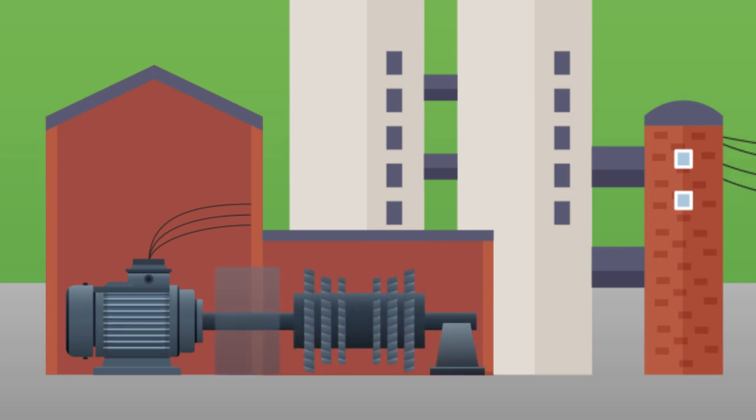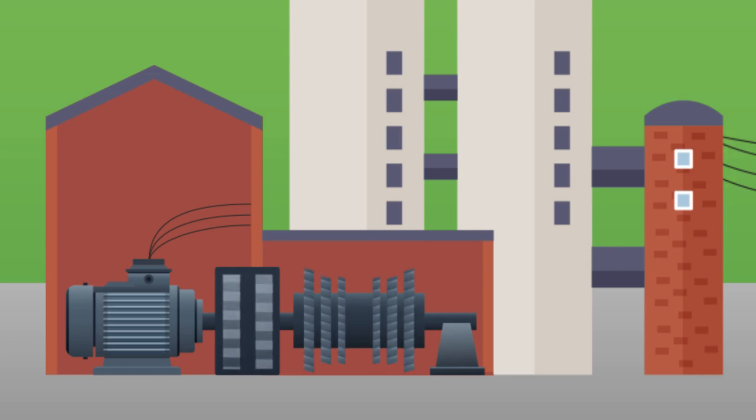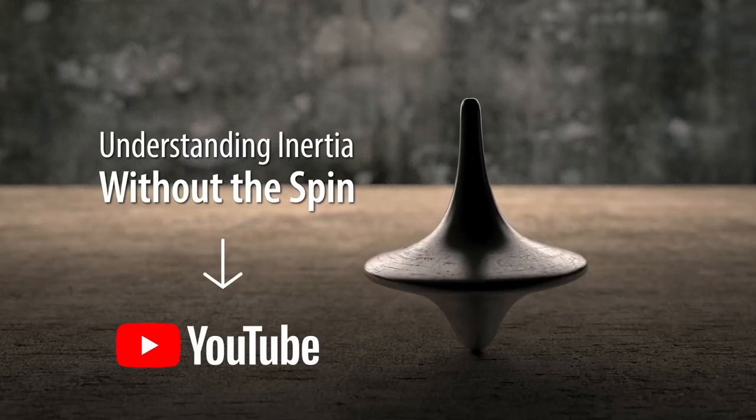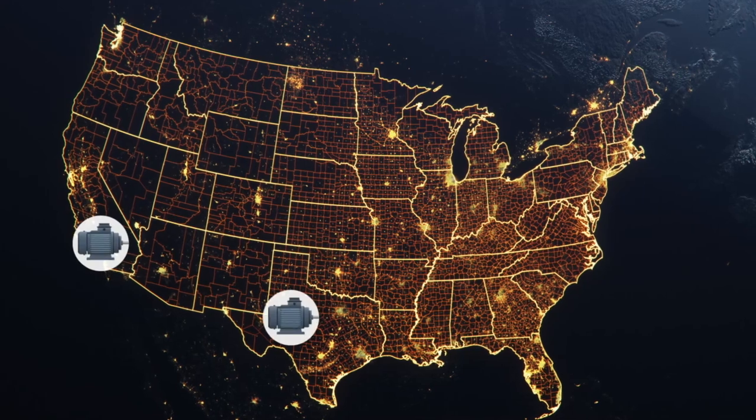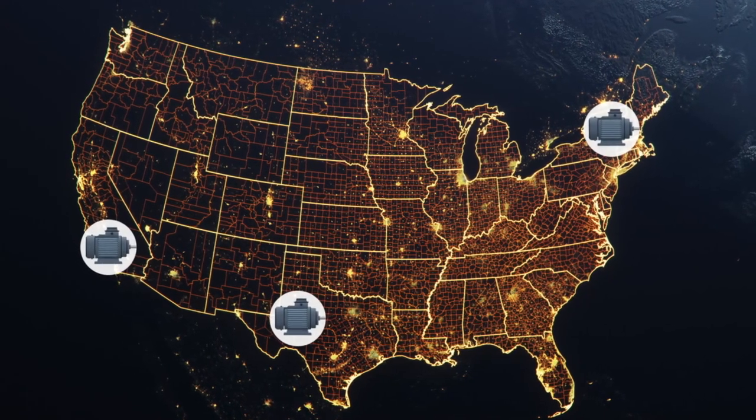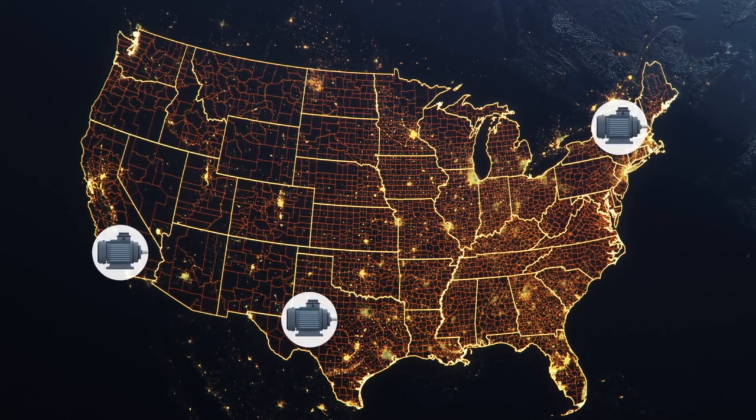Synchronous condensers can be repurposed from existing generators that are retiring. New or existing generators can also be modified with clutches, so they can run even when the power plant isn't needed for power. This means rarely used peaking plants can provide value to the grid, even when they're not providing energy. They also add inertia, which helps address that other challenge with inverter-based resources. And it's proven technology that is already making the grid stronger in locations throughout the U.S.